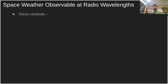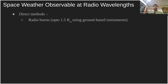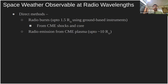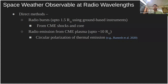The estimation of the CME magnetic field from white-light observations depends on geometrical modeling, the number of vantage points available, and the CME model being used. Radio observations are very well suited because they can provide remote measurements of the CME magnetic field — both at CME shock fronts and in the CME plasma itself.